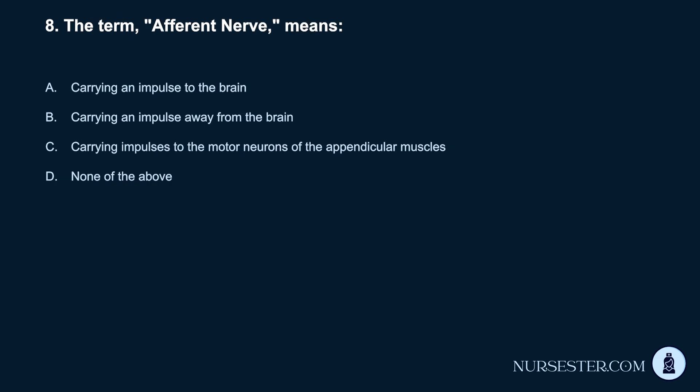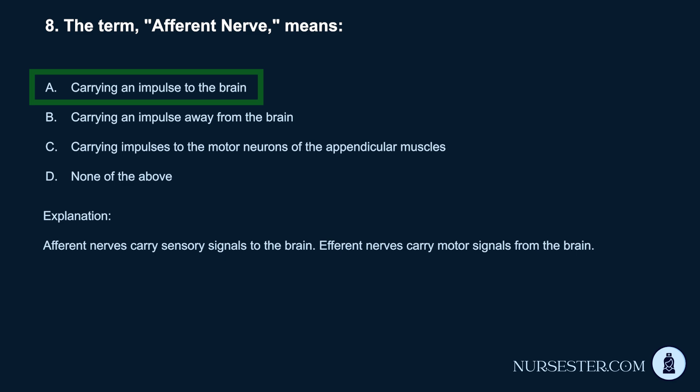Question 8. The term 'afferent nerve' means: a. Carrying an impulse to the brain. b. Carrying an impulse away from the brain. c. Carrying impulses to the motor neurons of the appendicular muscles. d. None of the above. Correct answer: a. Carrying an impulse to the brain. Afferent nerves carry sensory signals to the brain.